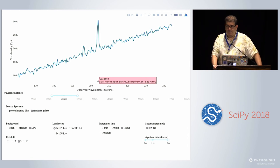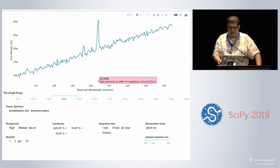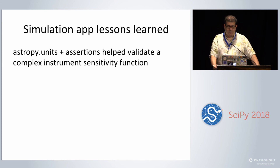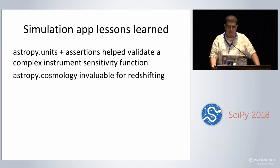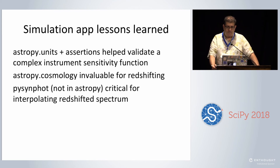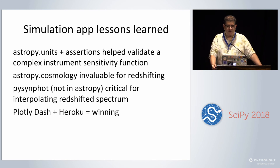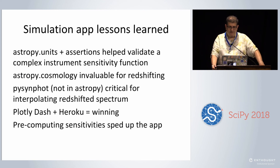I'm very happy with Plotly-Dash — it's worked out very well. What lessons did we learn from the simulation? AstroPy units plus assertions really helped in validating this complex function. AstroPy cosmology was very useful for getting the redshifts right. PySynphot was really good for interpolating the redshifted spectrum. I did have a problem just before debuting this tool where I had the wrong factor of 1+z — and since redshift is dimensionless, the units didn't help me out with that one, which took a lot of painful debugging. Plotly-Dash hosted on Heroku at $25 a month has worked out well, and pre-computing a lot of the sensitivities sped up the app a lot.